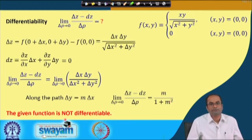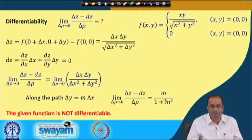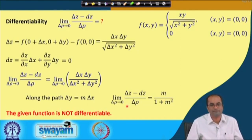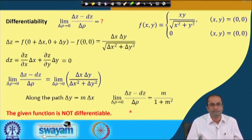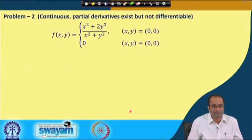Since the limit m / (1 + m²) depends on the path parameter m, the limit does not exist. For differentiability, this limit must equal 0, but it does not. Hence the function is not differentiable. This confirms: the function is continuous, partial derivatives exist, but it is not differentiable.